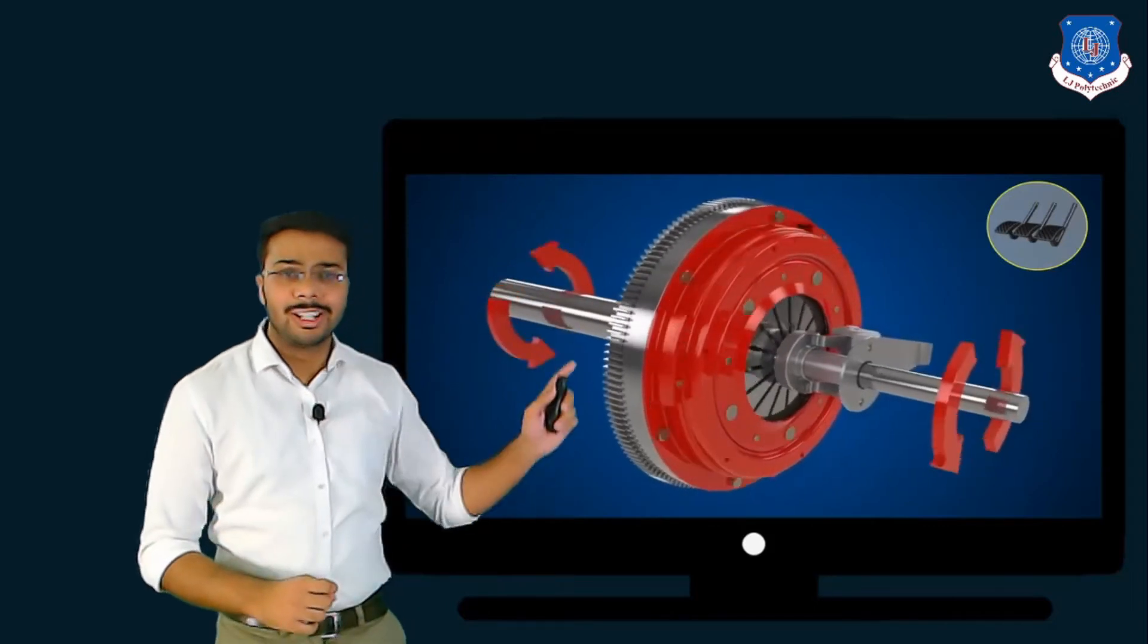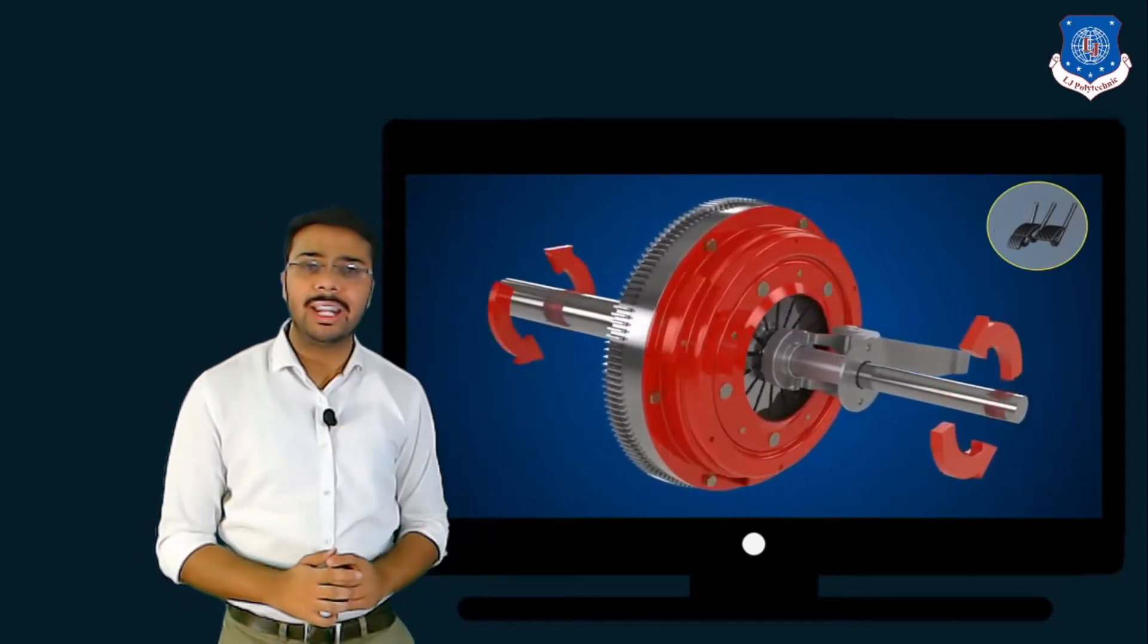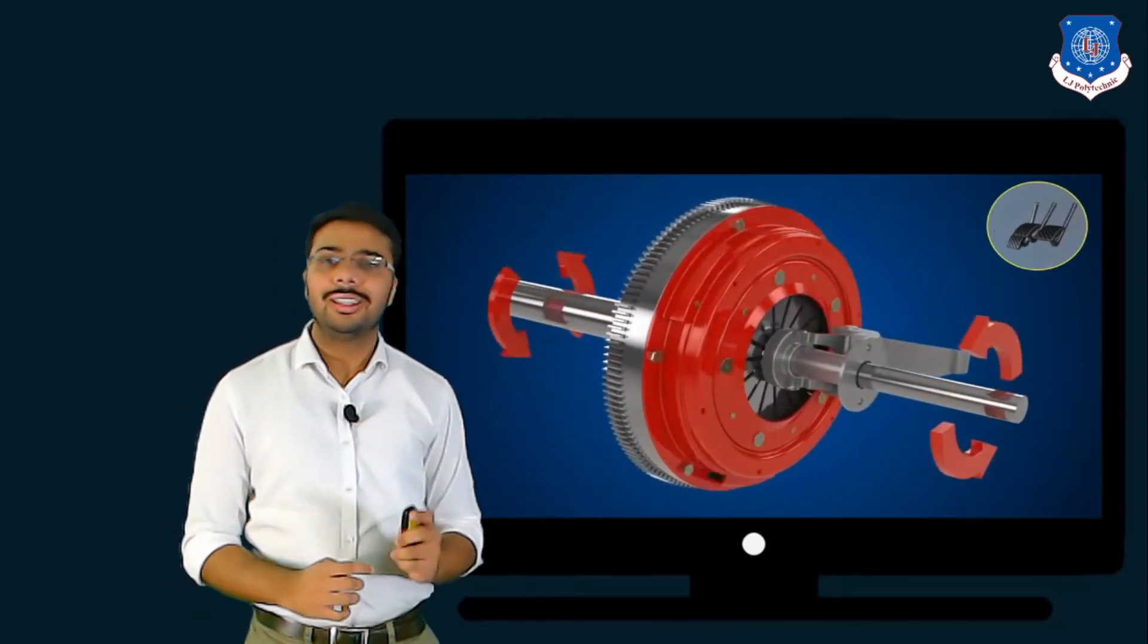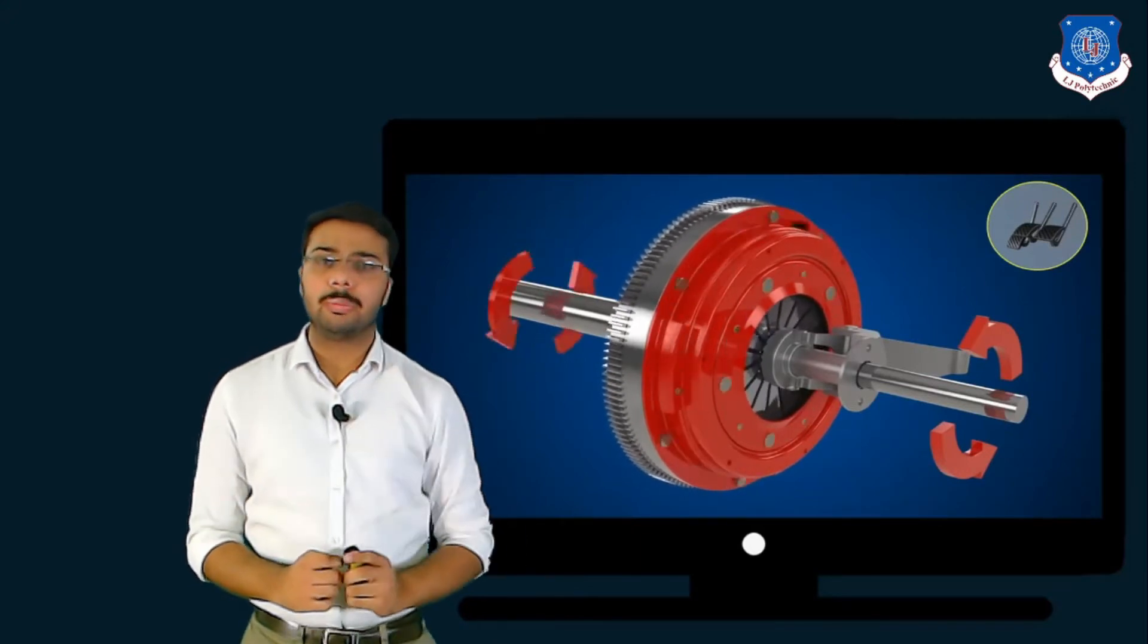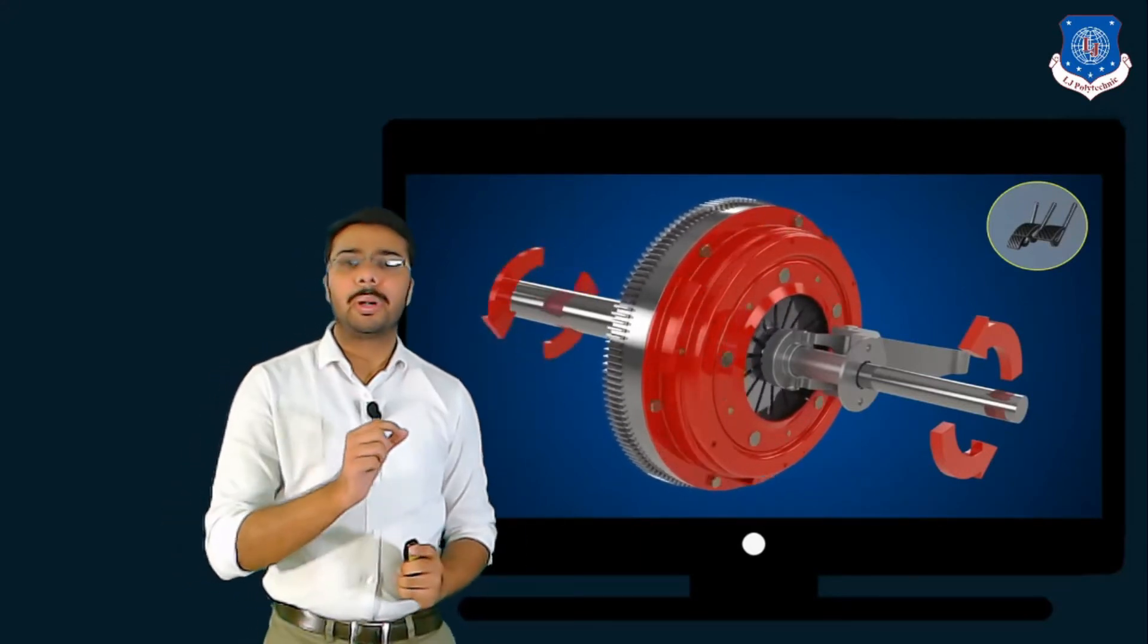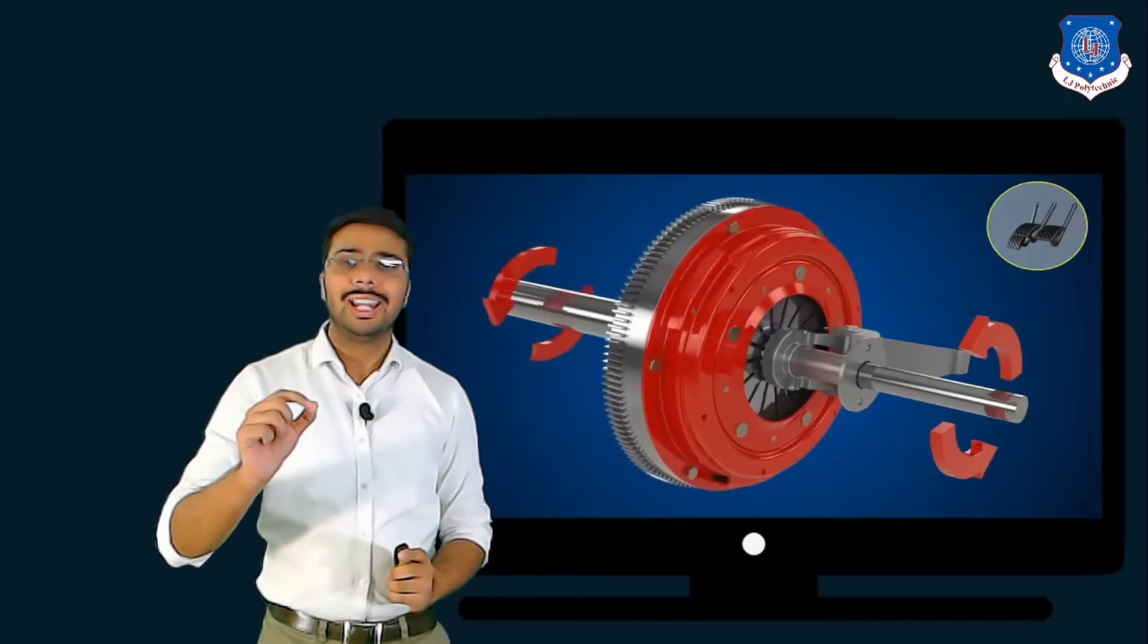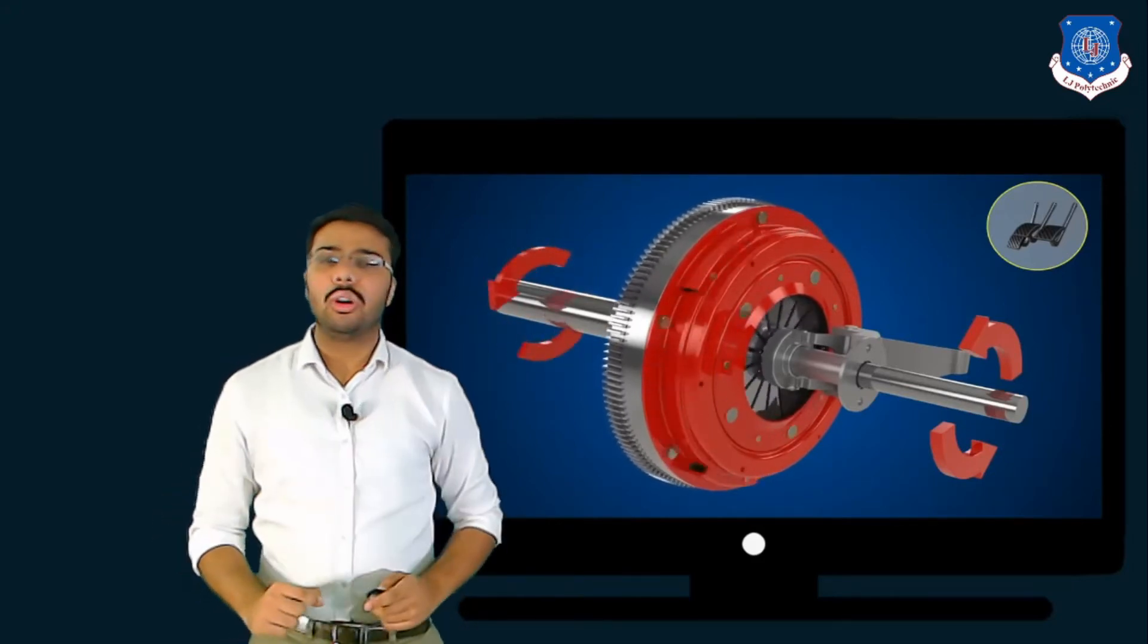Further you can see when the clutch pedal is depressed, via foot lever mechanism release bearing pushes on the diaphragm spring which further actuates the pressure plate. Thus reducing the pressure provided to the clutch plate. And this is called disengagement of clutch.